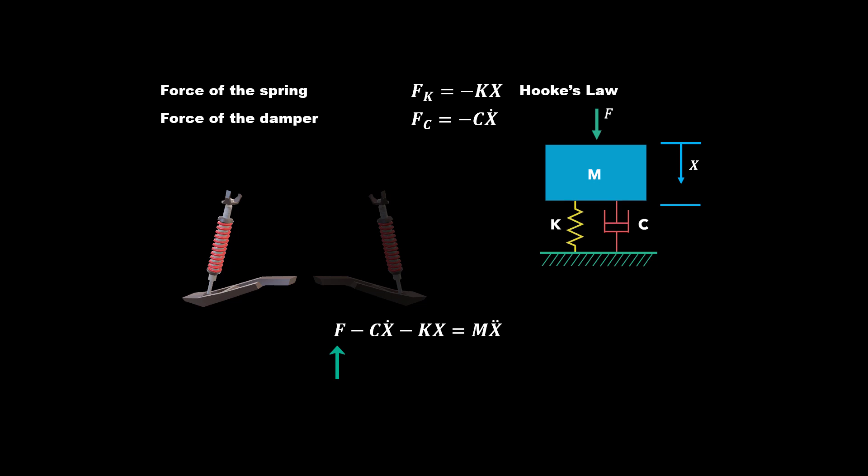So you have the external force minus the restoring force of the damper minus the restoring force of the spring is equal to mass times acceleration. We can rewrite this a little easier, and we have the fundamental equation for looking at a spring mass damper system.